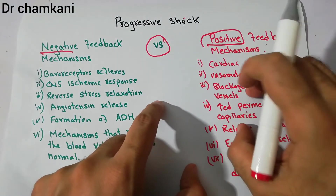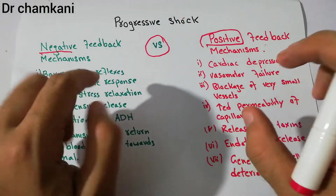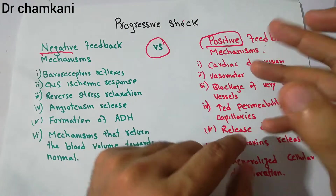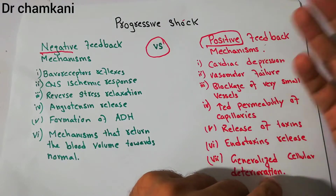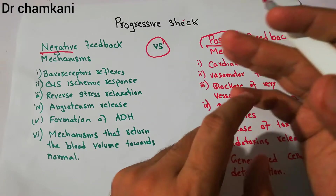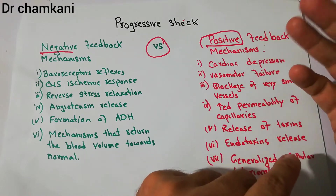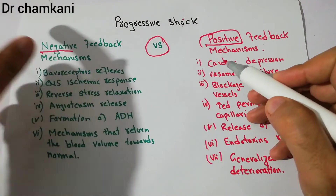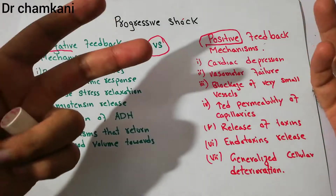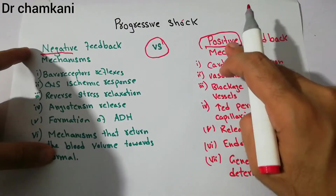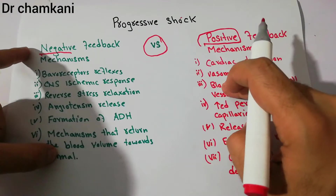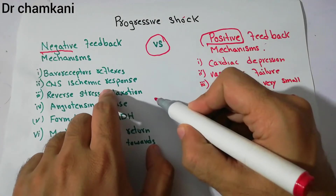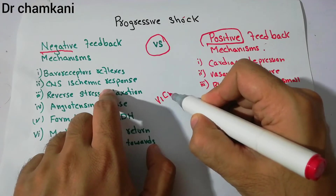If the positive feedback mechanisms are stronger because the severity of the shock is very high — for example, a patient who has bled around half or more than half of his blood in a road traffic accident, or a patient having a cardiogenic shock in which the initial cardiac depression due to myocardial infarction is very high — then these positive feedback mechanisms will be stronger than the negative feedback mechanisms, and the patient will easily enter the vicious circle.